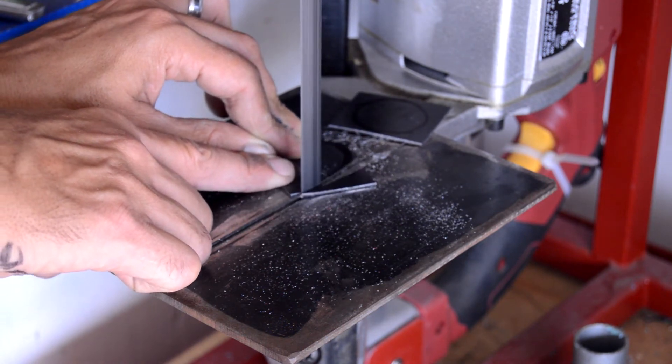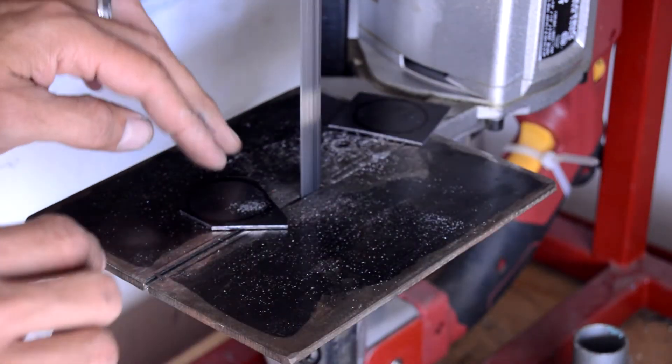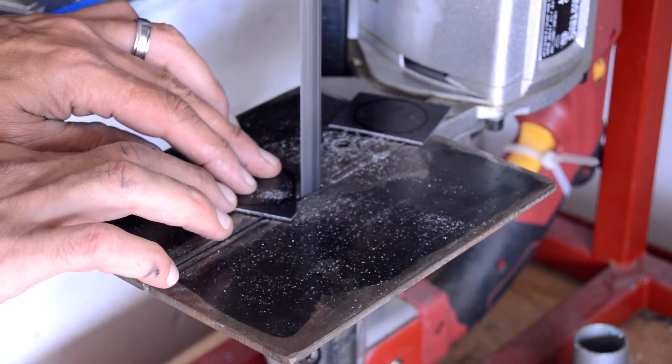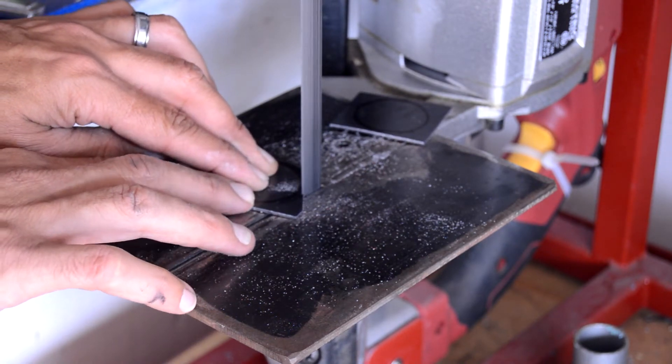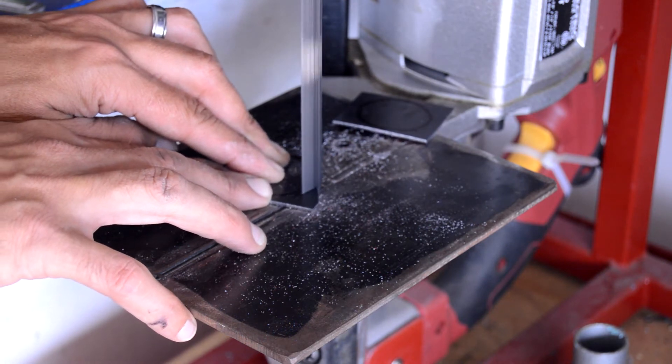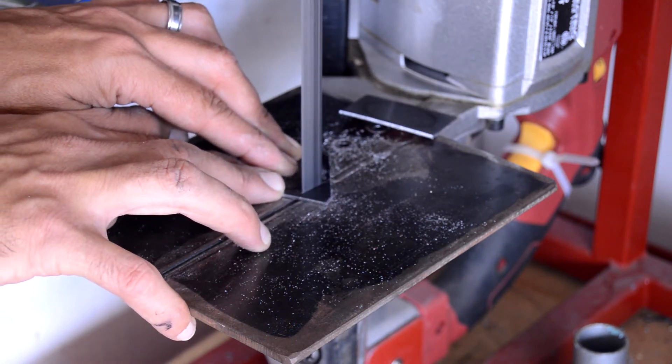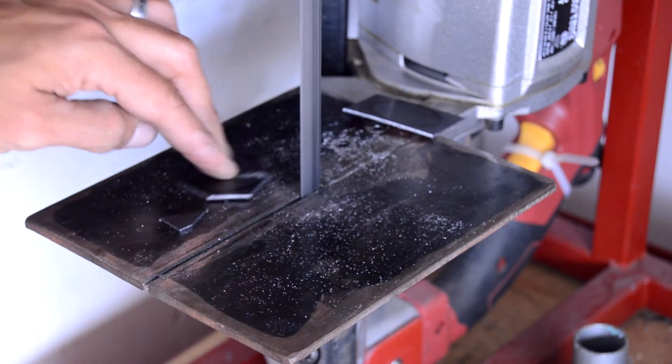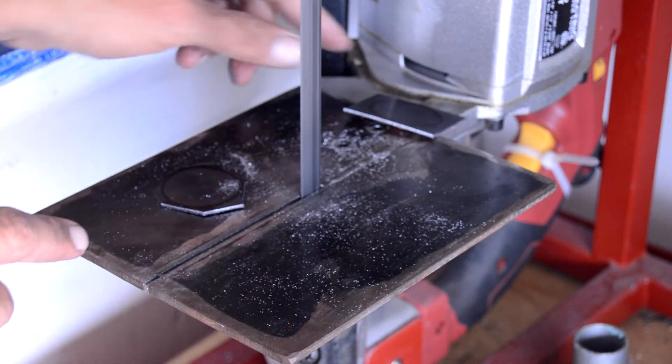I don't know, those things work okay for thick stuff but with really thin stuff they're just, I don't know, they seem really grabby and that's really like how they cut the thin stuff.